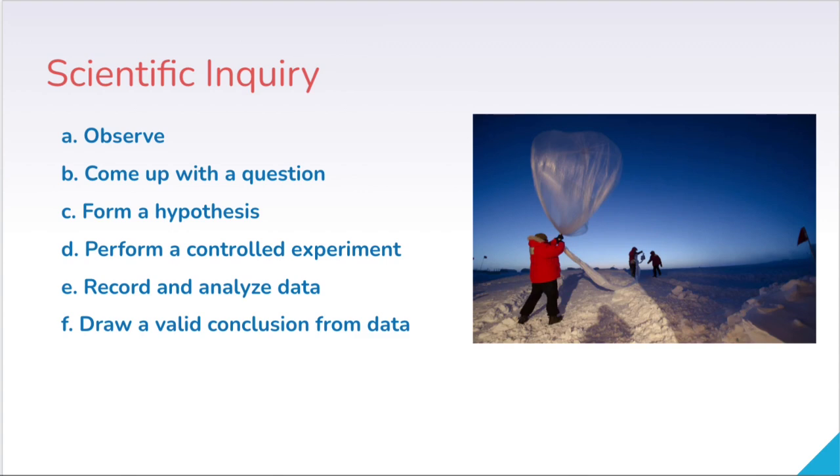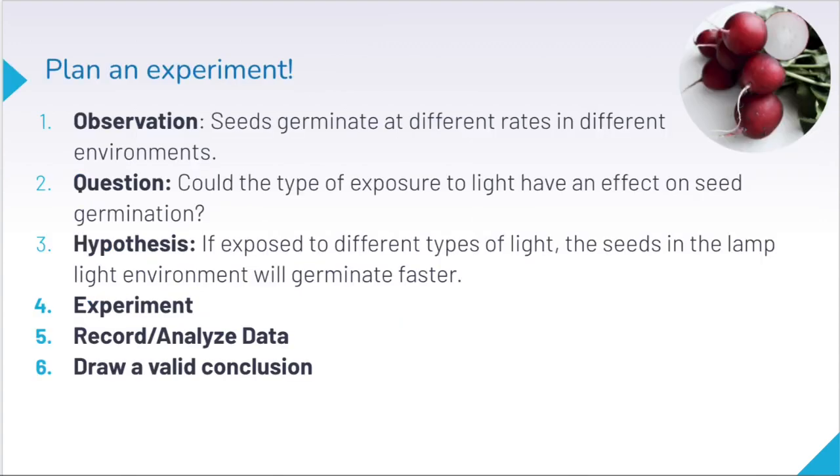When planning an experiment, let's go through an example. A student is going to do radish seed germination experiments, which is a common first experiment. You might make an observation that seeds germinate at different rates in different environments. You might come up with a question like, could the type of exposure to light have an effect on seed germination? For your hypothesis, it could be something like: if exposed to different types of light, the seeds in the lamp light will germinate faster than the seeds in the sunlight. That's one type of hypothesis you can make, following this general format.